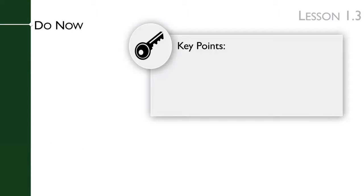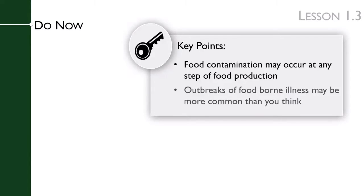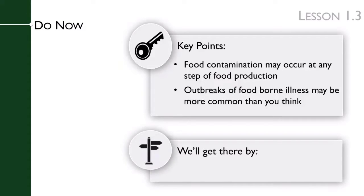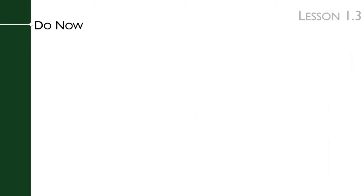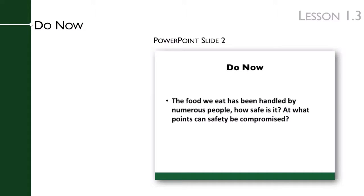The key points of the lesson's Do Now are that food contamination can occur at any step of the food production process, and that outbreaks of foodborne illness may be more common than you think. We get there by having a short discussion with students. You will ask students to recall the steps of food production and the possible points of contamination. This is a good time to ask students if they have heard about food recalls in the news — what was recalled, and do they remember the pathogen that caused the recall?